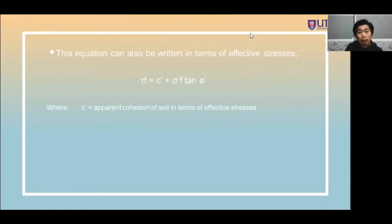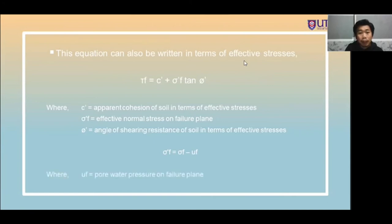The another equation can also be written in terms of effective stress, which is shear stress equals C prime plus sigma F prime tan phi prime. Where C prime is apparent cohesion of soil in terms of effective stresses, sigma F prime is effective normal stress on failure plane. The another equation is sigma F prime equals sigma F minus UF, where UF is represented by pore water pressure on failure plane.